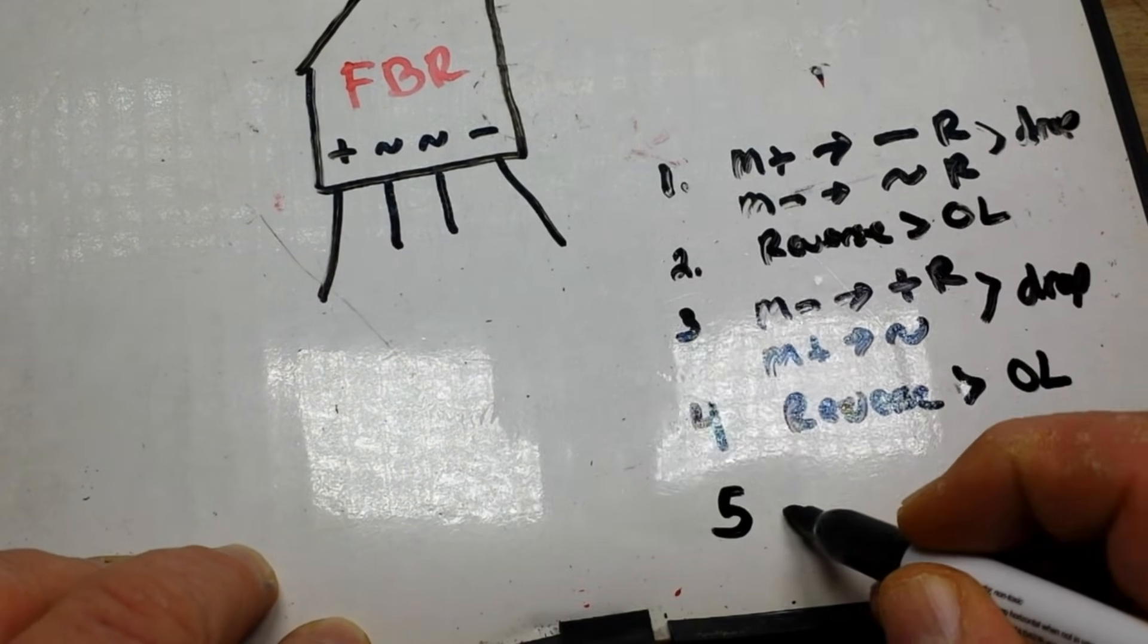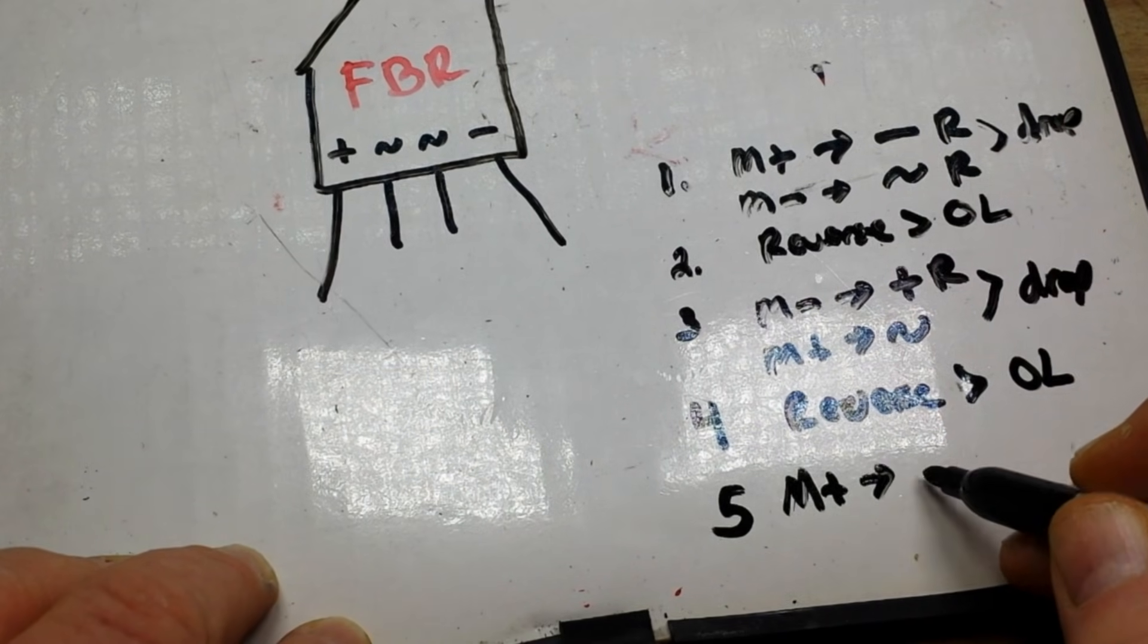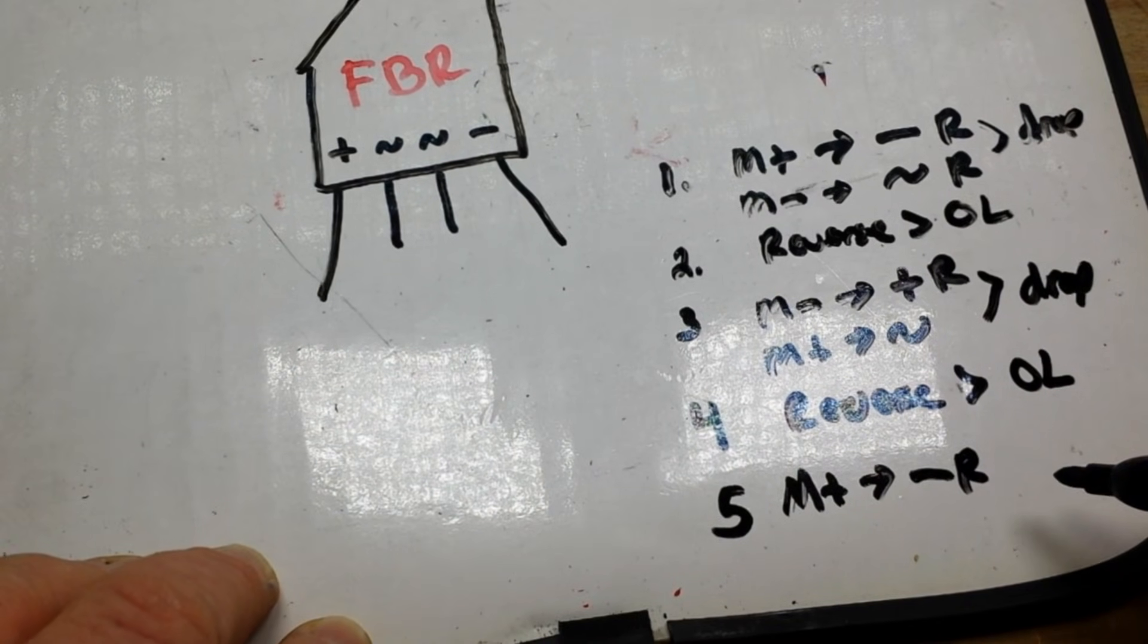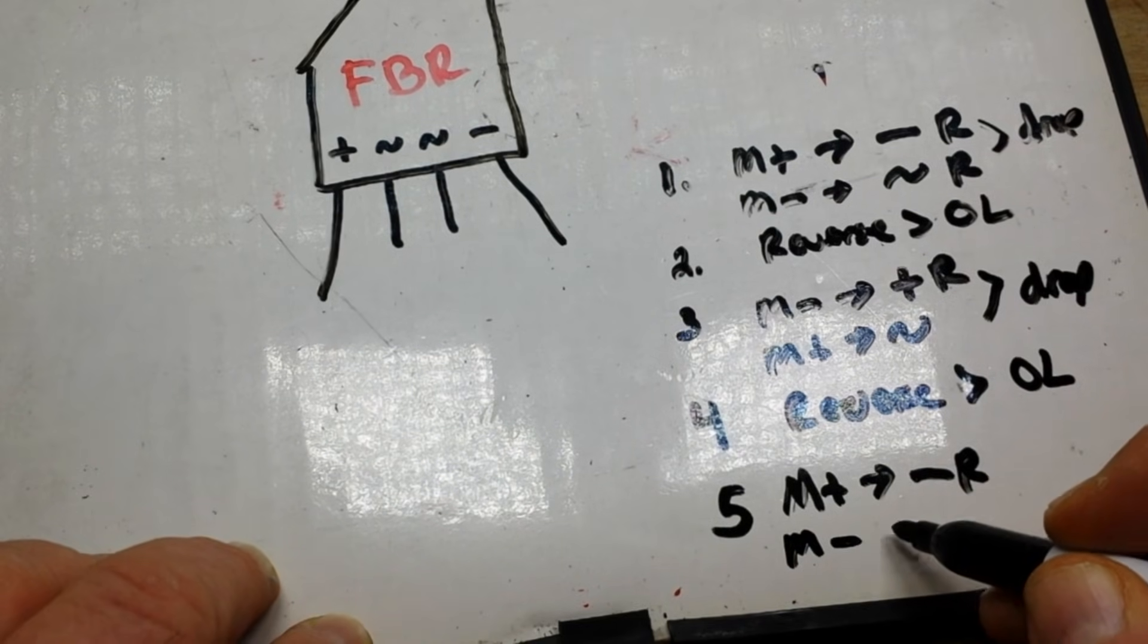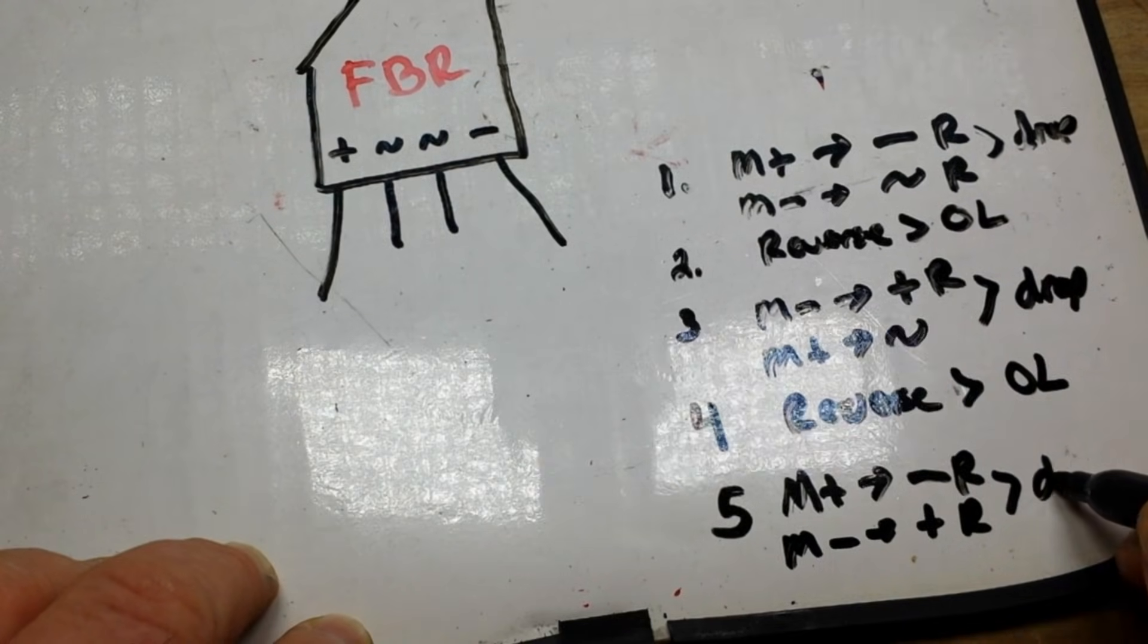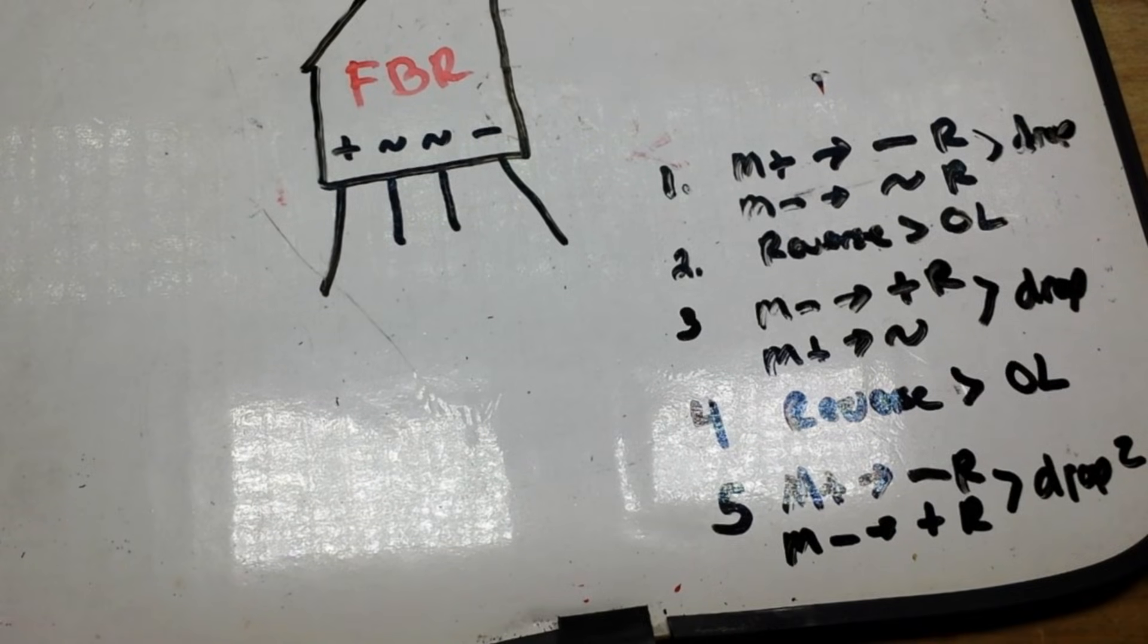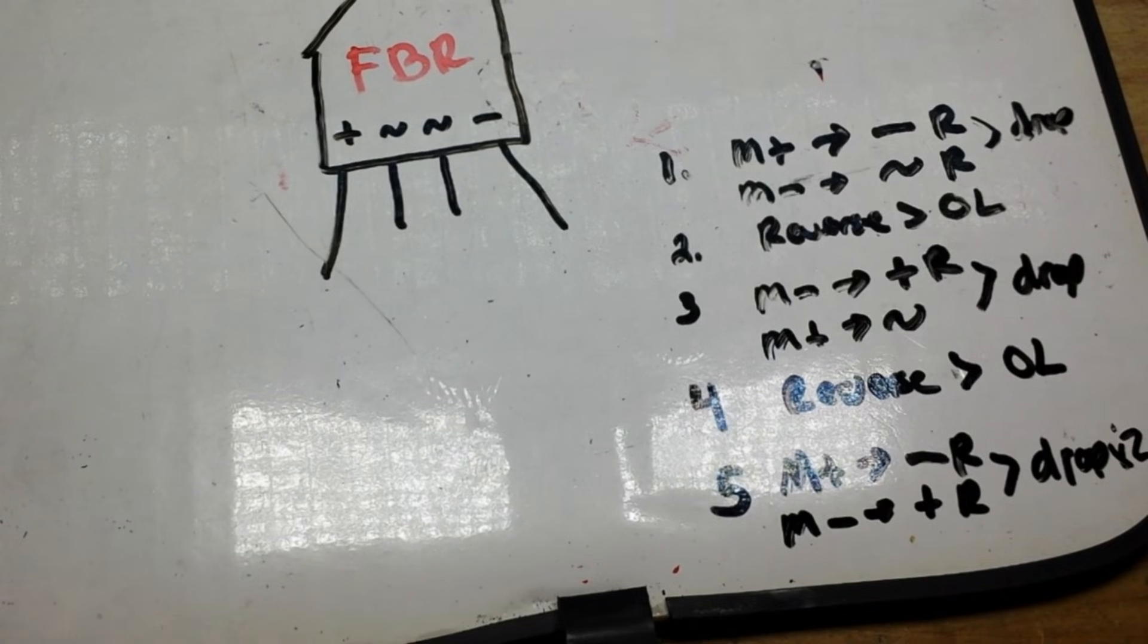Step five, meter positive to negative on the rectifier and meter negative to positive on the rectifier. You should get your drop squared, or actually not squared, it's drop times two, a double diode drop. All right.